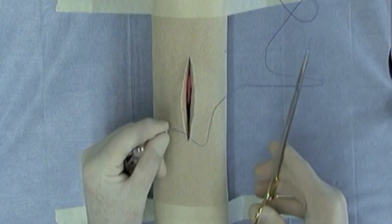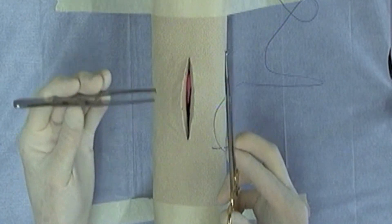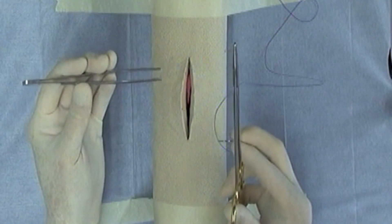We'll be using needle holders, some form of thumb forceps. This one happens to be a rat tooth forceps.